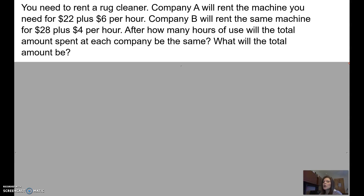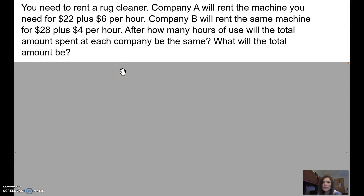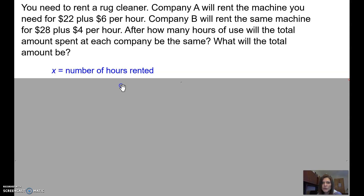So if I have a really long project, there will probably come a point at which Company B is actually more cost effective for me. In this problem, I want to figure out when will the two prices be equivalent. That will tell me, estimating how long my job would be, where I should go to get the machine. So first off, what am I looking for? I'm looking for how many hours of use so that the cost is the same. My variable is going to be based on what it is I'm looking for, what I'm told to find.